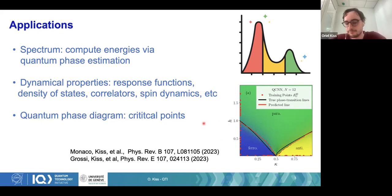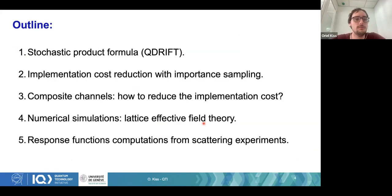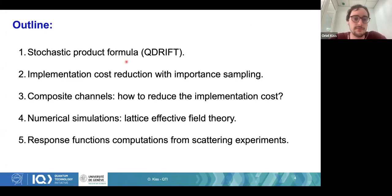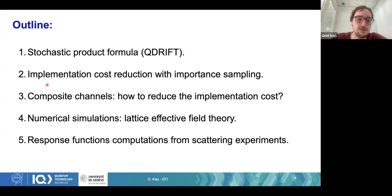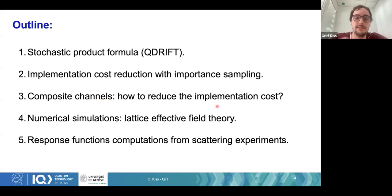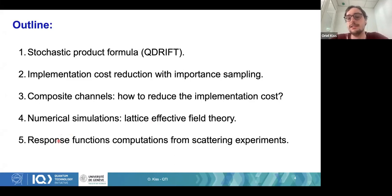Now we know what we want to do and why. The outline of the talk: the first part introduces time evolution via the QDrift protocol, which is a stochastic way to build product formulas. Then we go to the main part — how to reduce cost using importance sampling. Then we cover composite channels as a way to reduce cost further and improve accuracy. Finally we see some numerical simulations on lattice field theory and a response function experiment on a NISQ device.